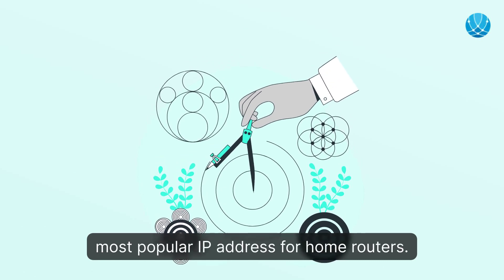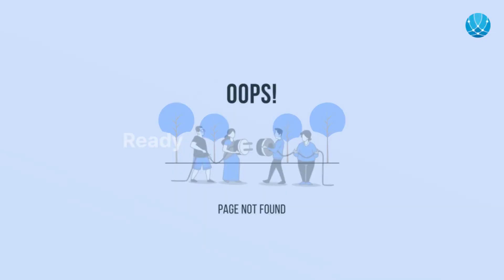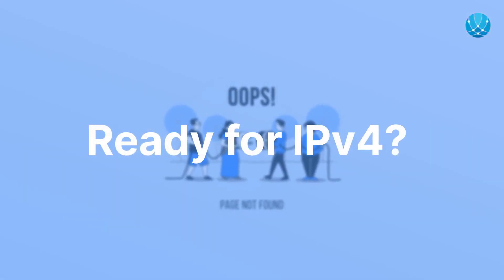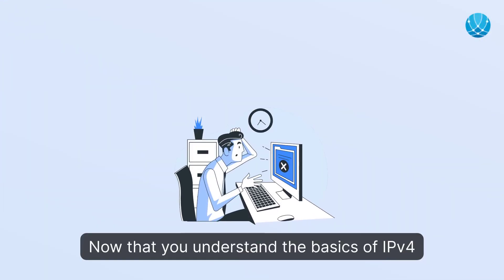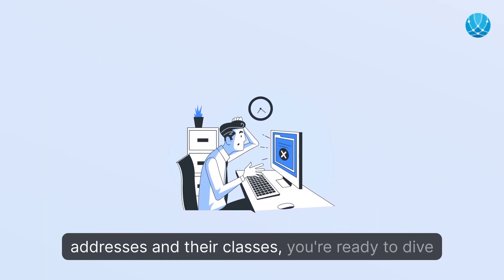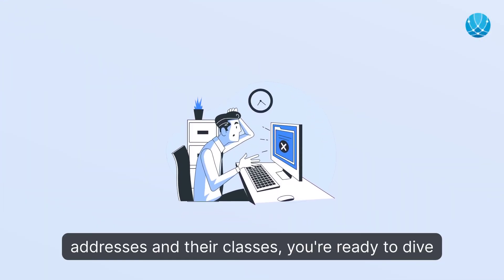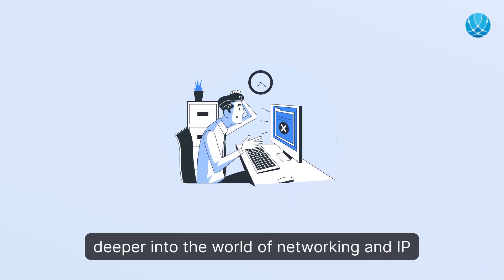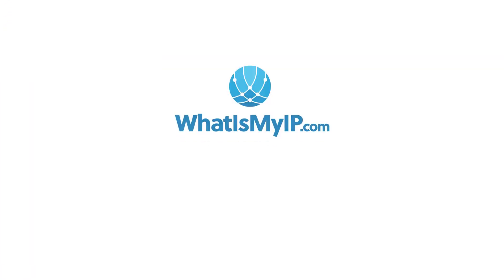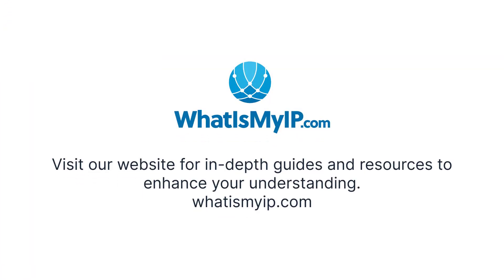You probably recognize 192.168.1.1, because this is the most popular IP address for home routers. Now that you understand the basics of IPv4 addresses and their classes, you're ready to dive deeper into the world of networking and IP addressing. Visit our website for in-depth guides and resources to enhance your understanding — whatismyip.com.